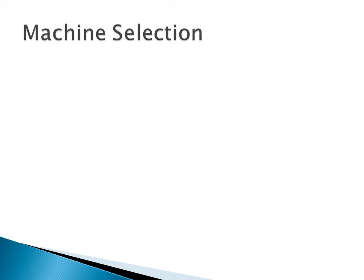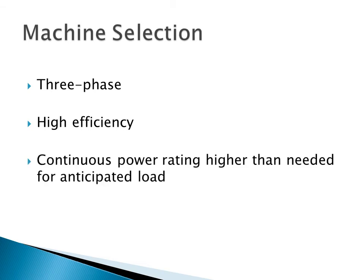Okay, so for machine selection, we're going to want to choose a three-phase machine. They have ratings much higher than single-phase, and they're much more common. You're going to want high efficiency. This will reduce the copper losses inside. It should have a continuous power rating higher than the needed rating for your anticipated load. This is because when they're operating in generating mode, the stresses are a bit higher, and the core may be a little bit more susceptible to saturation. And then, whatever type of enclosure you need will depend on the installation, but it may need to be waterproof, dustproof, totally enclosed, fan ventilated, etc.